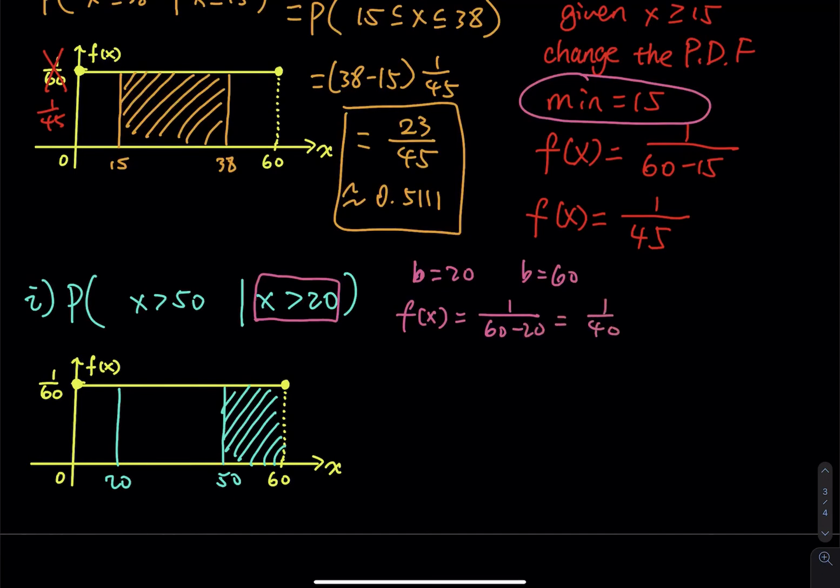Then you cross this out. I don't mind you cross this out on your paper. So 1 divided by 40. You cross that out. That tells me you understand what's going on, right?